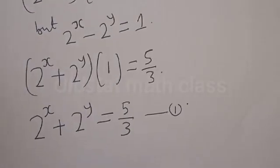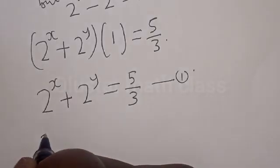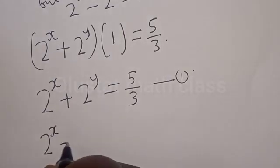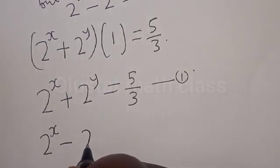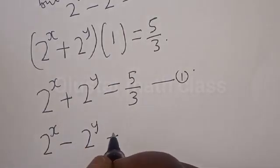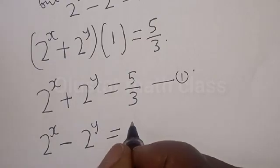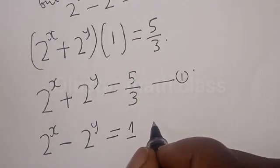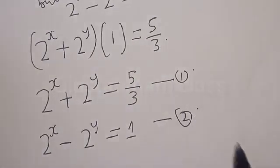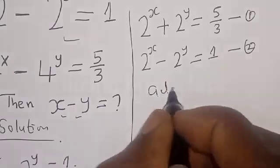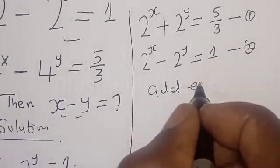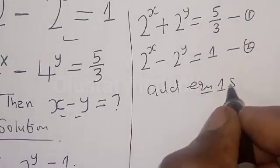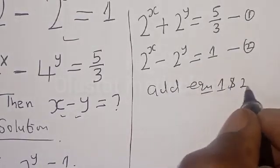Now let 2 raised to the power x minus 2 raised to the power y equals 1 be our second equation, equation 2. We now have equation 1 and equation 2.